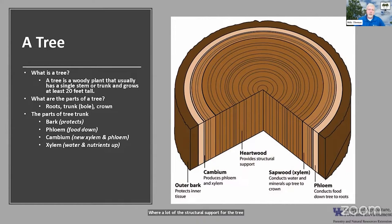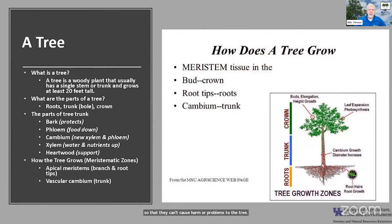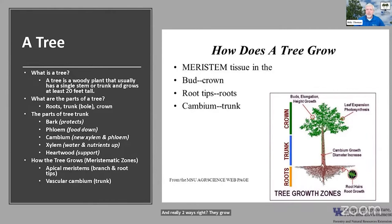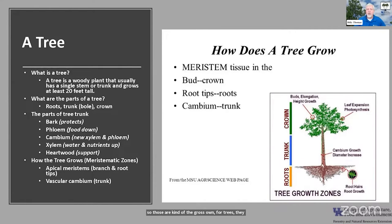The heartwood is also a great place for the tree to park chemicals or molecules that are problematic — it can store those away so they can't cause harm. Trees grow in really two ways: they grow longer, and they grow wider. There is meristematic tissue at the very ends in the buds and root tips, which allows the tree and roots to grow longer and taller. The cambium meristematic tissue allows the tree to grow wider. So those are the growth zones for trees.